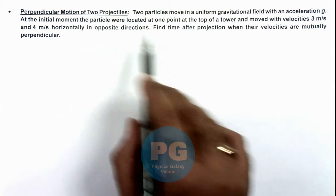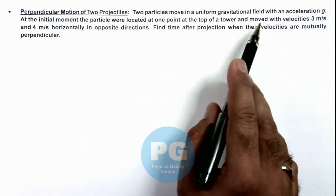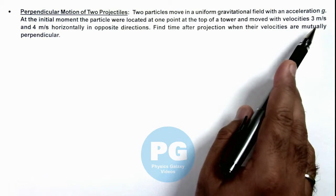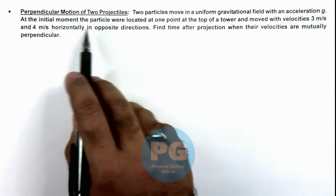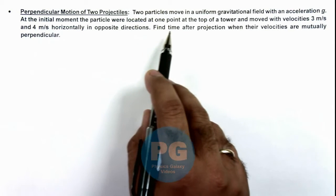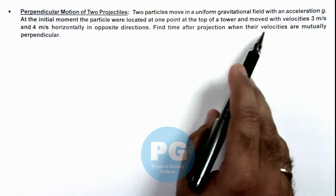Here we are given that two projectiles move in a uniform gravitational field with an acceleration g. At an initial moment the particles were located at one point at the top of a tower and moved with velocities.